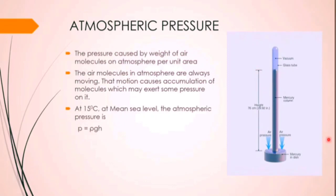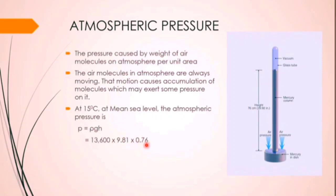So we can measure atmospheric pressure from this data. The pressure formula is P = ρgH. Rho is the density of mercury, that is 13,600 kg per meter cube; g is 9.81 m/s²; and H is the height from the barometer, that is 76 centimeters or 0.76 meters. So we get the value 101,325 Newton per meter square. One Newton per meter square is one Pascal, so that is 101,325 Pascal or 101.325 kilopascal.